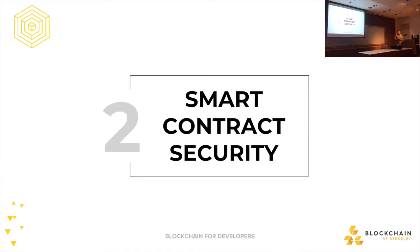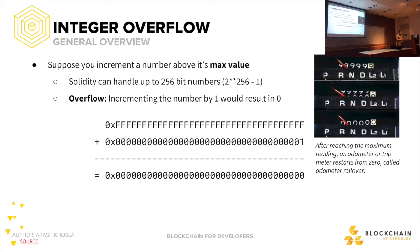It gets a lot deeper and a lot trickier than that. To start, I'd like to introduce an interesting bug that comes up pretty frequently in smart contracts: integer overflow. Solidity can handle up to 256-bit numbers. Suppose you have an unsigned int at its max value and you increment it by one — it turns to zero.